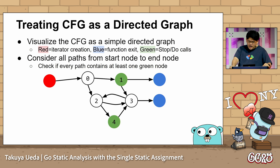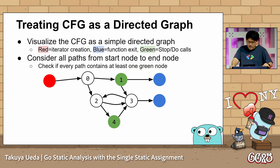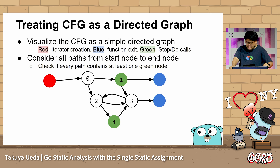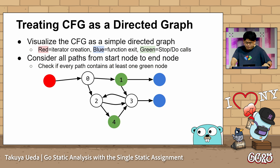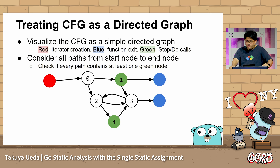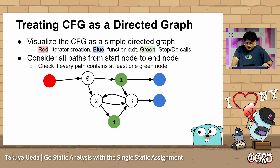Let me explain how Jaguarne detects session leaks using SSA. We treat the control flow graph as a directed graph and color the nodes. Red nodes are where iterators are created. Blue nodes are where the function exits. Green nodes are where the stop or do method is called. Then we check all possible paths from red to blue — if there's any path that doesn't go through a green node, we've found a potential session leak.